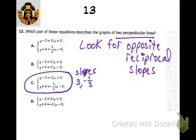For perpendicular lines, we're just looking for opposite reciprocal slopes — you can see them there: 3 and negative one-third.